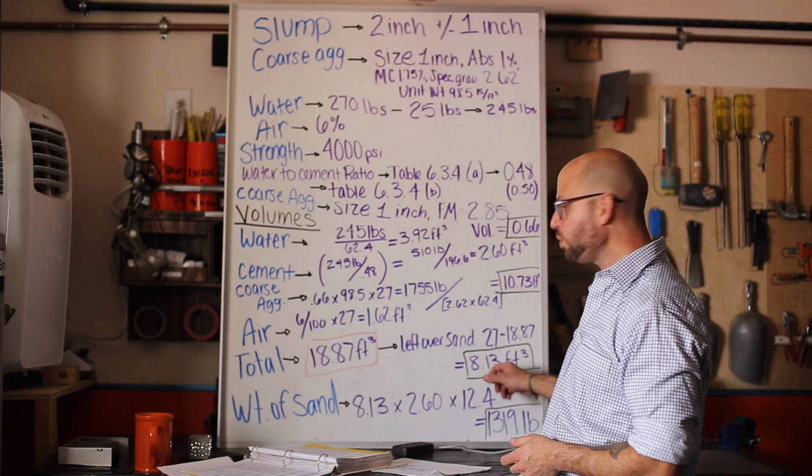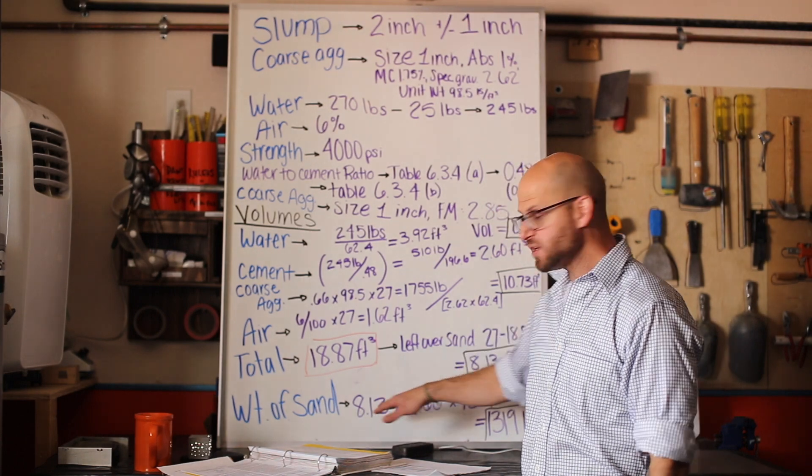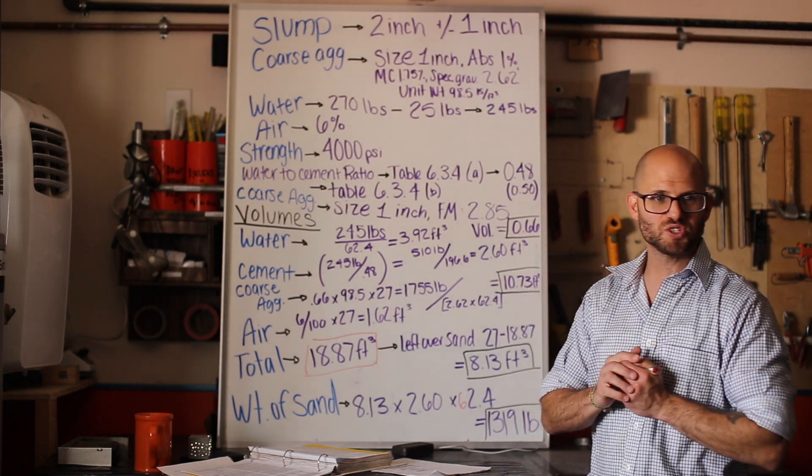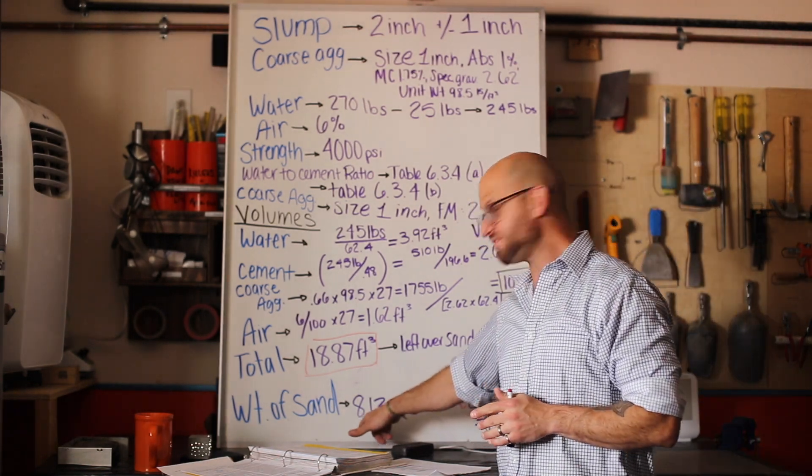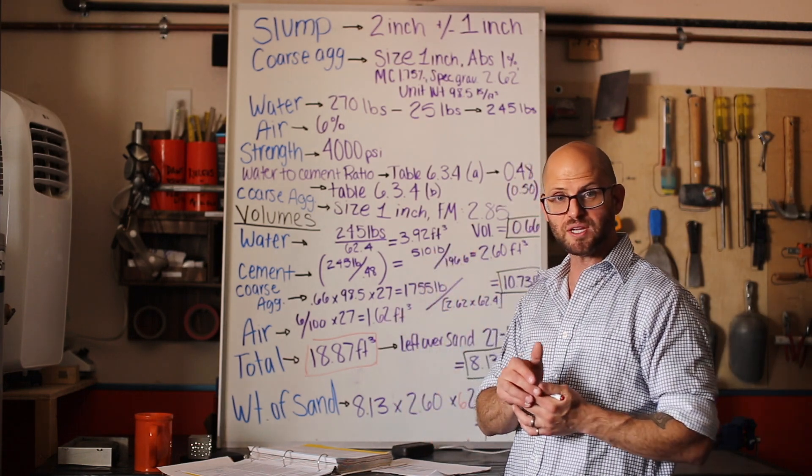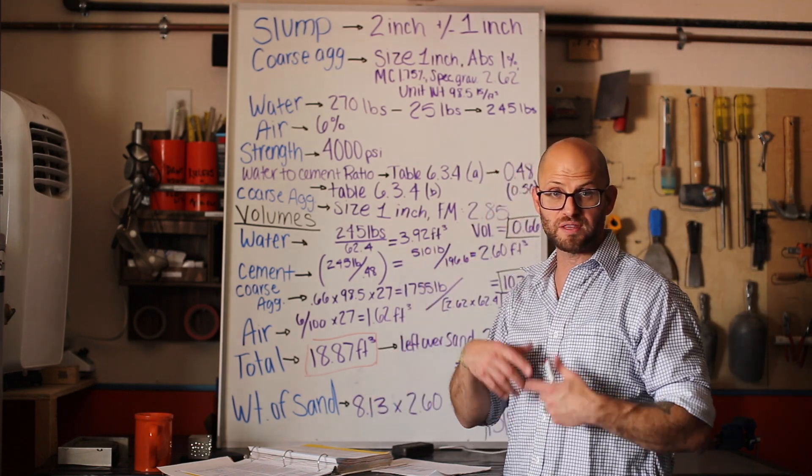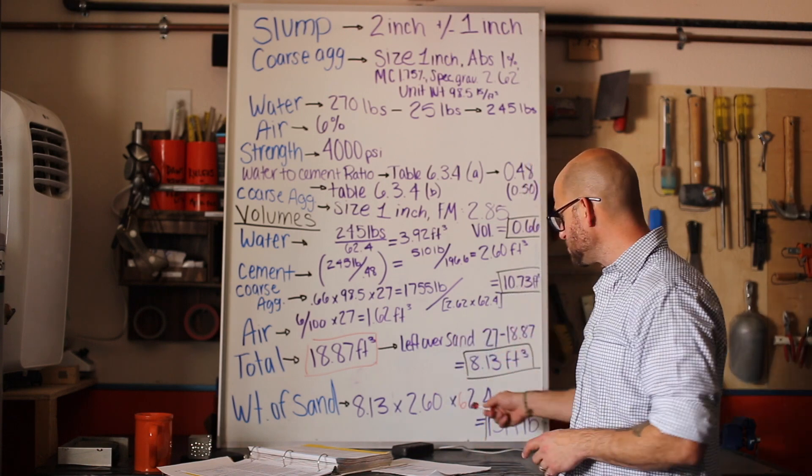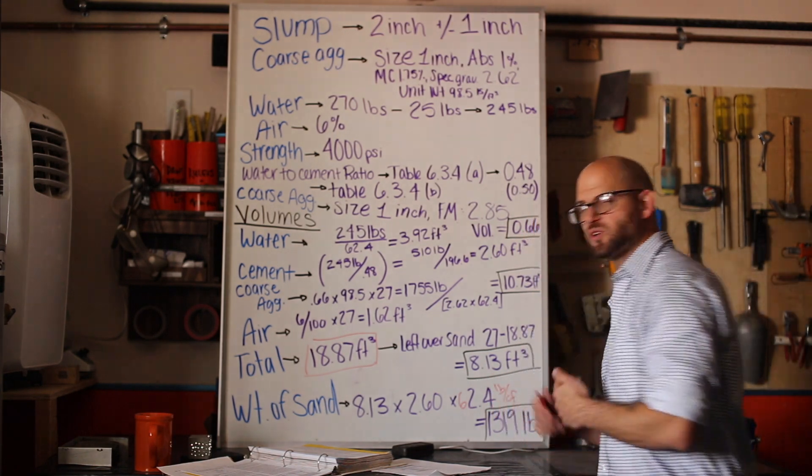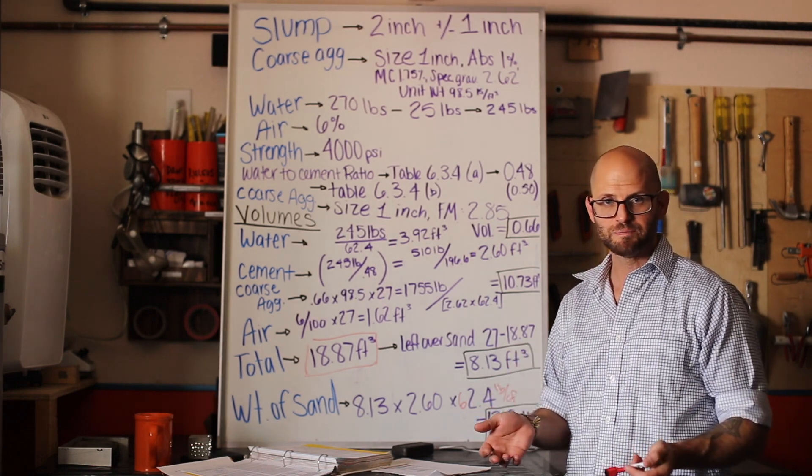We've used 18.87 cubic feet out of our 27 cubic feet for all those materials. Now our leftovers, our 8.13, that's going to go to our sand. What we do is we take that 8.13 cubic feet, multiply it by the specific gravity of our sand and our unit weight of water, 62.4 pounds. We've got our known volume that we have left, we have our specific gravity. Now what we need to do is from that specific gravity create a pounds per cubic foot and multiply that by our known volume to give us the weight that we're using for this cubic yard of concrete of sand.